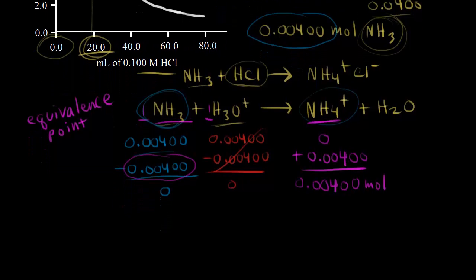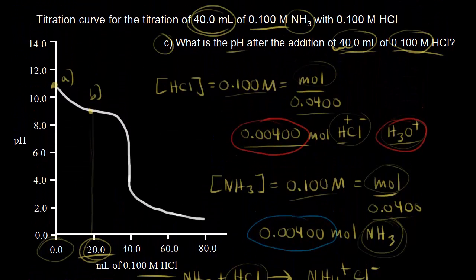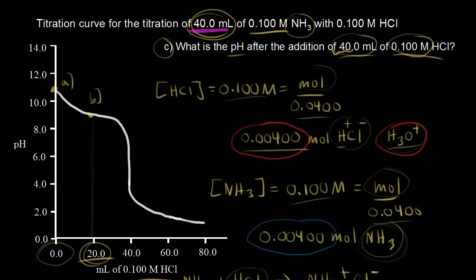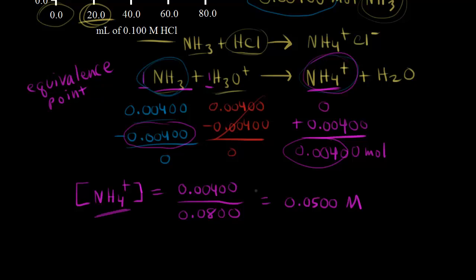At the equivalence point, we have 0.004 moles of NH₄⁺ present. What's the concentration? Concentration is moles over liters: 0.004 moles divided by the total volume. We started with 40 mL and added 40 mL, so total volume is 80 mL, or 0.08 liters. So 0.004 divided by 0.08 equals 0.05 molar — that's the concentration of NH₄⁺ present.